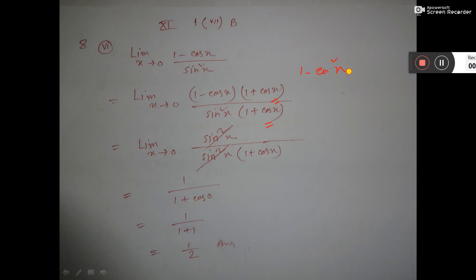So 1 minus cos square x can directly be written as sin square x. Now the sin square terms cancel out. Then it is left only as limit x tends to 0, 1 over 1 plus cos x.